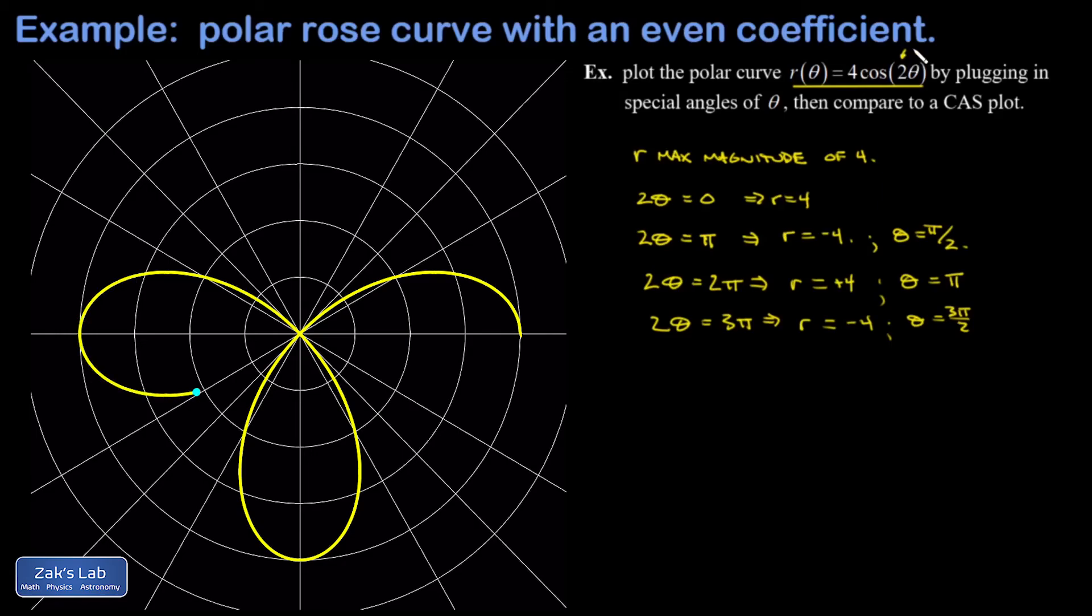This time we have an even coefficient of θ, the number 2, and it turns out it has twice as many petals as that. So this is an odd fact about rose curves - if they have an even coefficient of θ you have to double that number to find out how many petals they have.